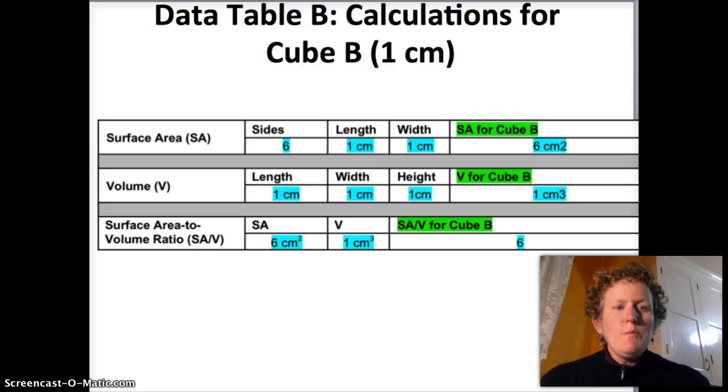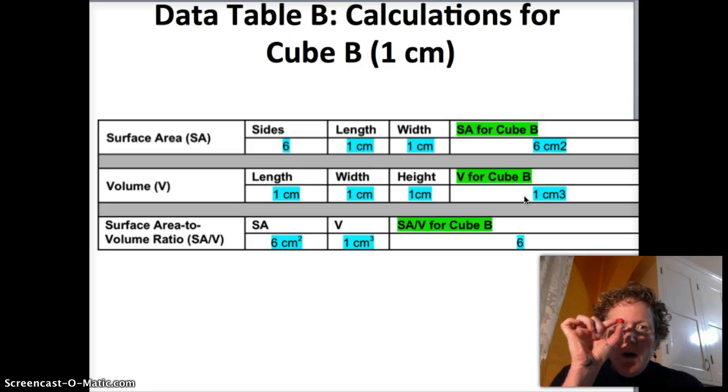So at the end of part 1 we were talking about the surface area to volume ratio for cube B. Here is data table B in question 1. The surface area for cube B was 6 square centimeters, the volume was 1 centimeter cubed, and when you take 6 and divide it by 1 you get a ratio of 6.